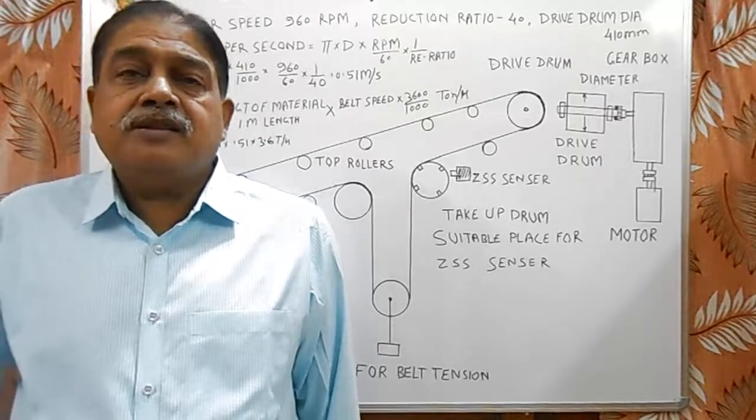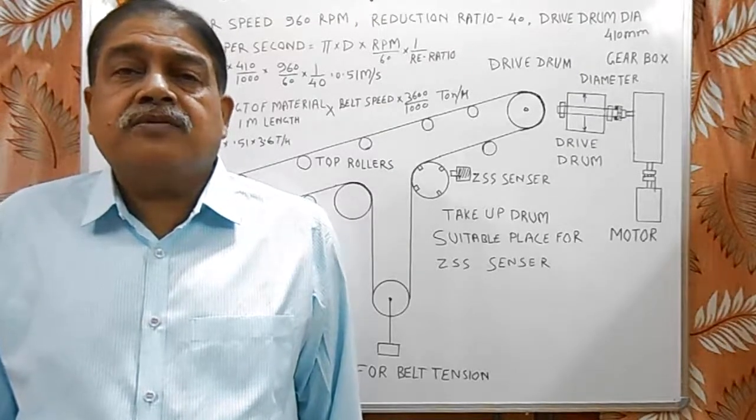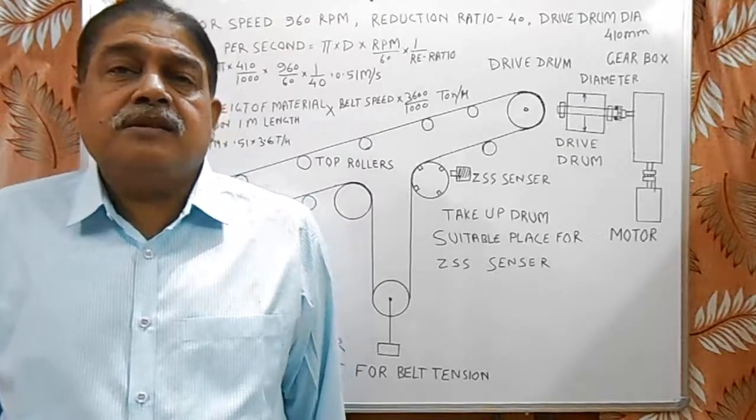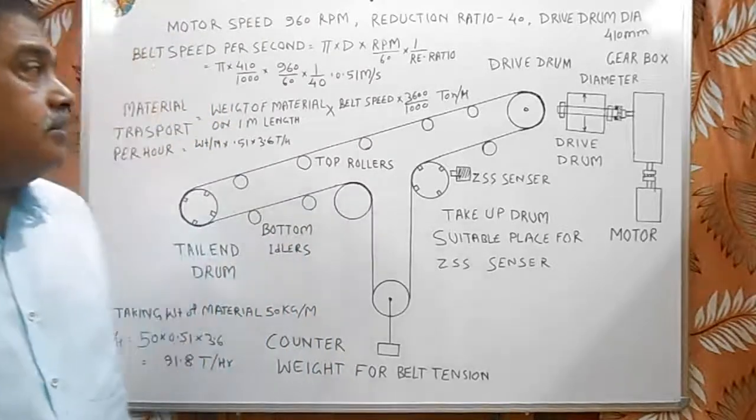Conveyor belts are mostly used in industries for transportation of bulk materials. In conveyor belts there are main components shown in this figure.